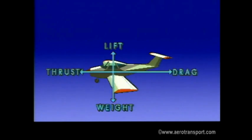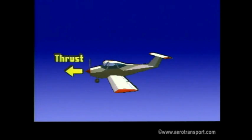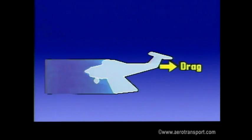We'll now deal with the other two main forces affecting flight: thrust and drag. In level flight, thrust and drag are the two horizontal forces acting on the aircraft. Thrust, the forward motion, is provided by the aircraft's propeller. Drag results from the resistance to the aircraft passing through the air.